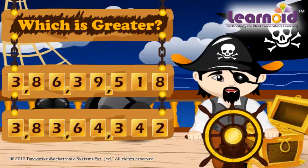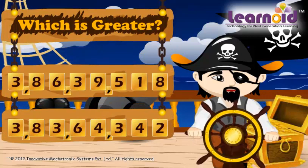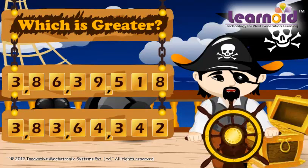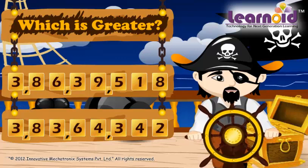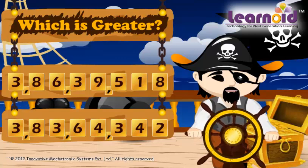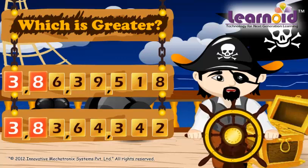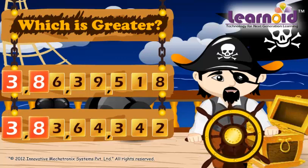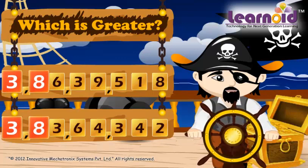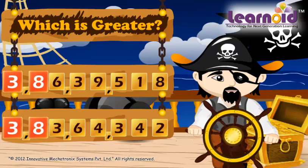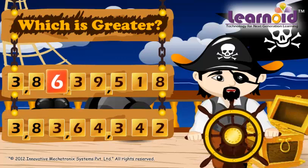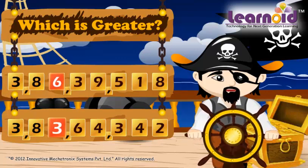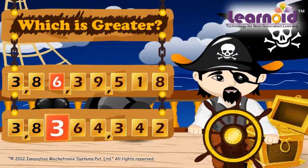Which number is greater? To compare which number is greater, let's check from the left side. Here, the first two digits are seen in both the numbers. But here, the third digit is 6 and here it is 3.